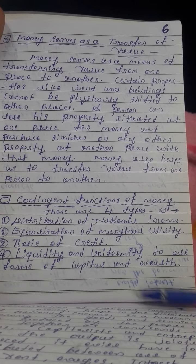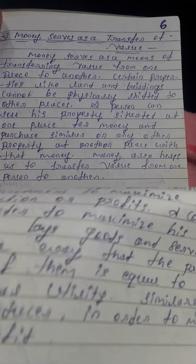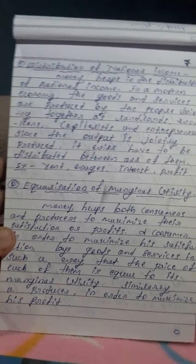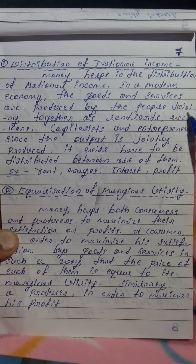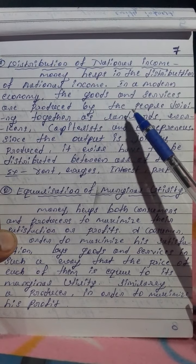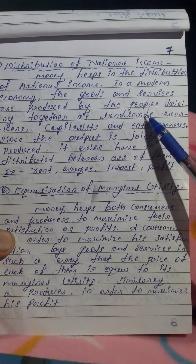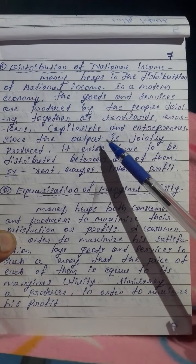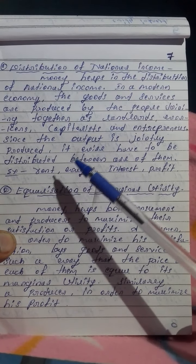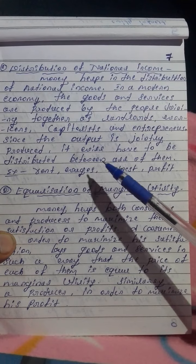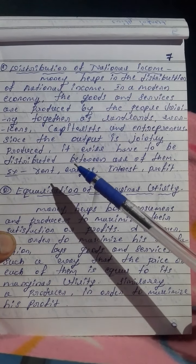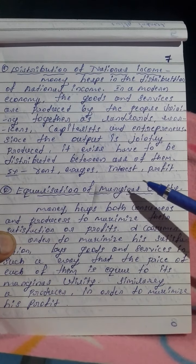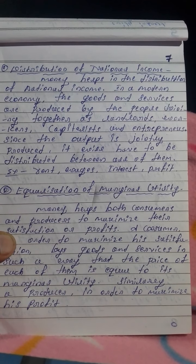Point number one: Distribution of National Income. Money helps in the distribution of national income. In a modern economy, goods and services are produced by people joining together as landlords, workers, capitalists, and entrepreneurs. Since the output is jointly produced, it has to be distributed among all of them — for example, rent, wages, interest, and profit.